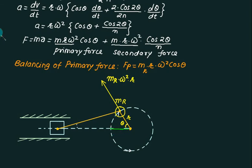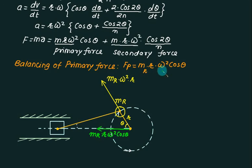If I resolve this component along this direction, this component equals m times r times omega squared times cos theta. This value is the same, so temporarily we assume one revolving mass, and the component of this mass will be the primary force. The primary force acts along the line of direction of stroke — the piston is truly reciprocating, going up and down, so it has forces only on this side.